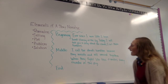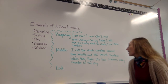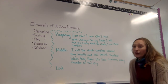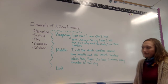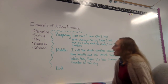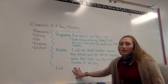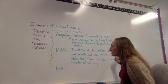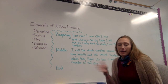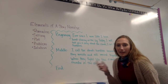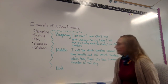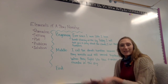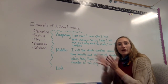In the middle: I call the clouds tumblers because they wrestle and roll around together. When they fight like this, it makes scary thunder in the sky. So at the end, we need to have some sort of solution. We need to fix this problem from fighting. How do we make the thunder go away? How do we make the clouds stop fighting? We have to give them a push, and once they separate, the thunder stops.